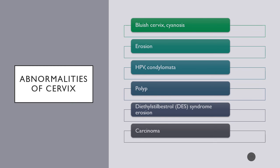It is important to note that postmenopausal vaginal bleeding is never okay and should always be investigated further. You should consider it cancer until proven otherwise. The two big cancers to worry about are uterine and cervical.